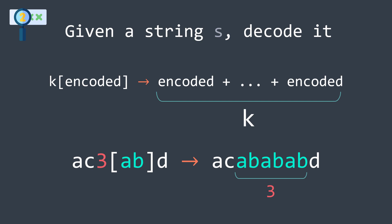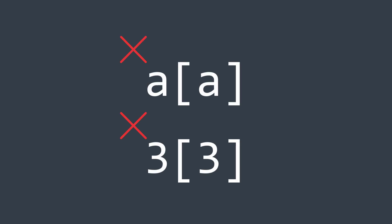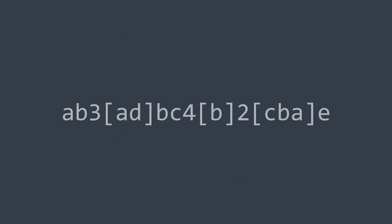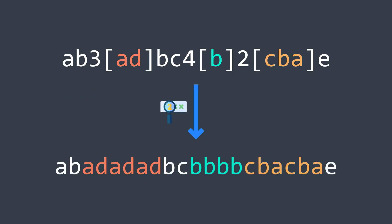Assume that the input string is always valid. This problem would have been easy if there were no nested encoded strings — we just have to search for integers k and multiply the string that comes after each one of them.